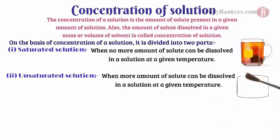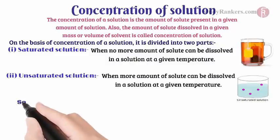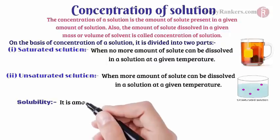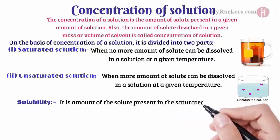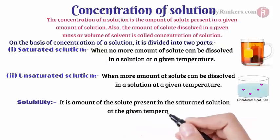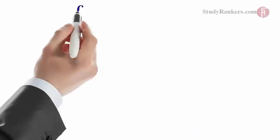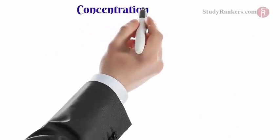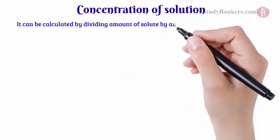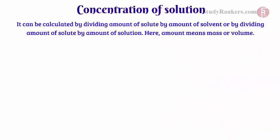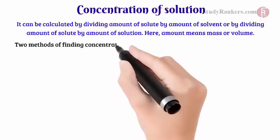An unsaturated solution is when more amount of solute can be dissolved in a solution at a given temperature. Solubility is the amount of solute present in the saturated solution at a given temperature. There are two methods to calculate the concentration of a solution: it can be calculated by dividing the amount of solute by the amount of solvent, or by dividing the amount of solute by the amount of solution. Here, amount means mass or volume.